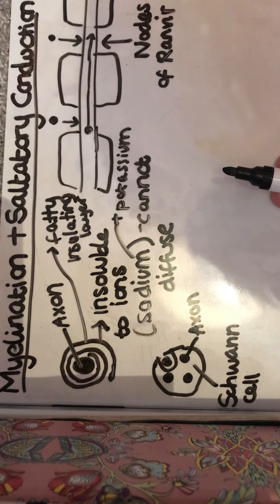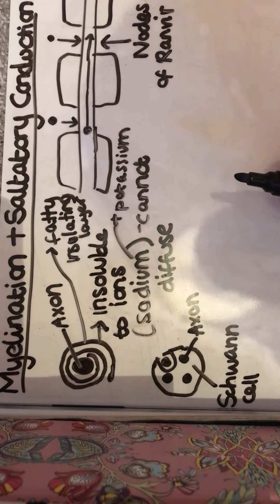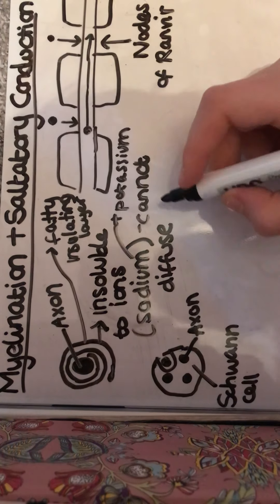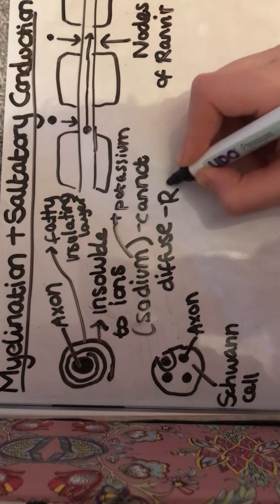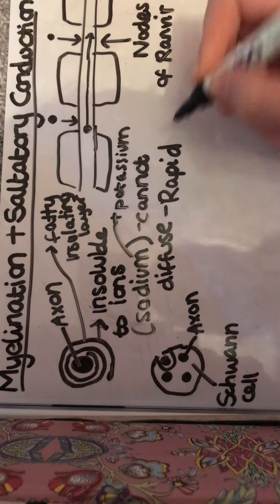So the action potential is going to jump from one node to the next, so this is going to be more rapid conduction.